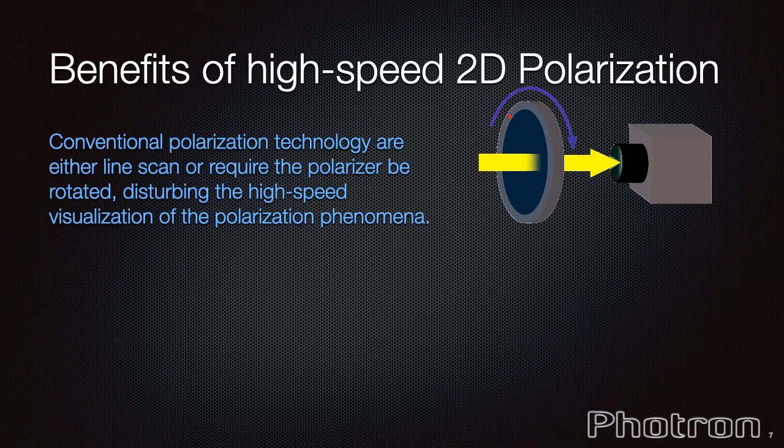The benefits of high-speed 2D polarization. Well, traditional polarization systems typically utilize rotating or moving polarization filters. This prevents them from capturing full-speed two-dimensional data at any usable speeds.